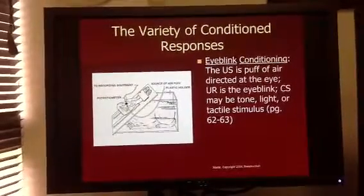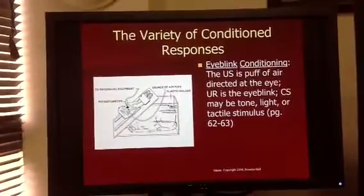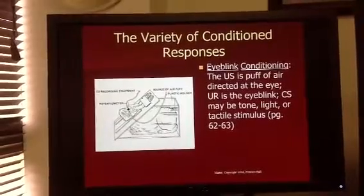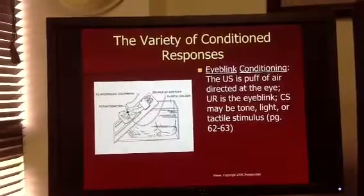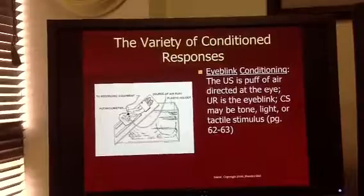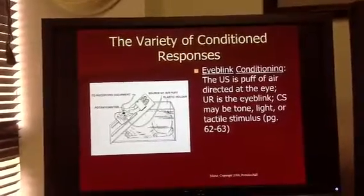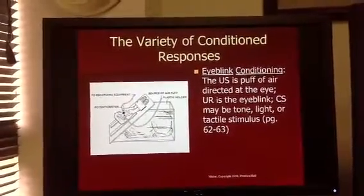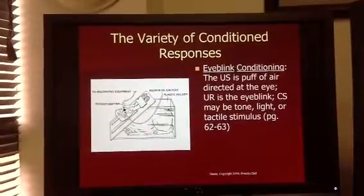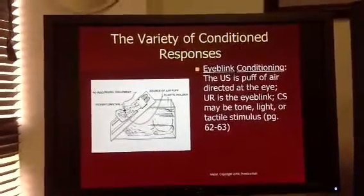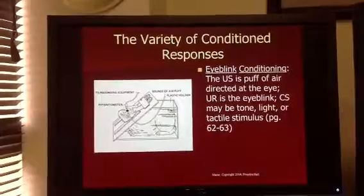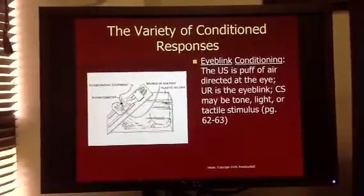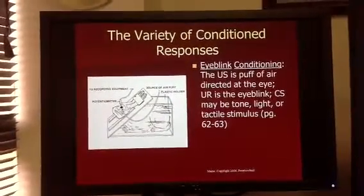So to summarize this experiment again, the unconditioned stimulus is a puff of air. A puff of air was blown into the rabbit's eye, and he responded with blinking. A conditioned stimulus was paired with the puff of air—being either a tone, light, or a tactile stimulus. And the bunny rabbit, of course, blinked when the puff of air went in its eye.